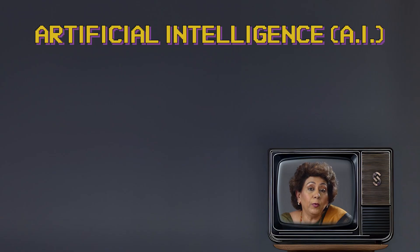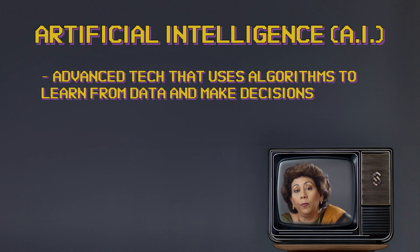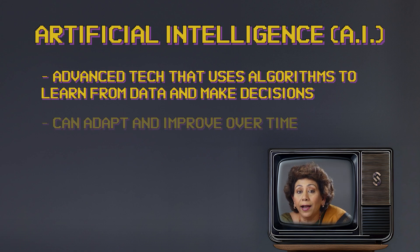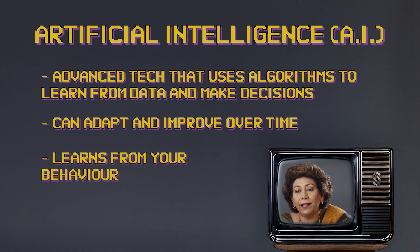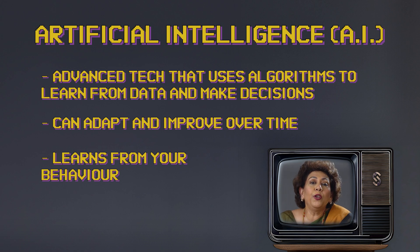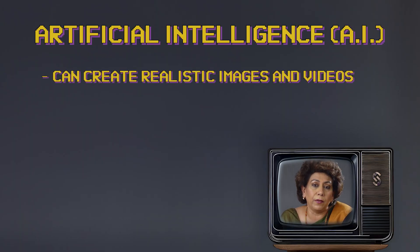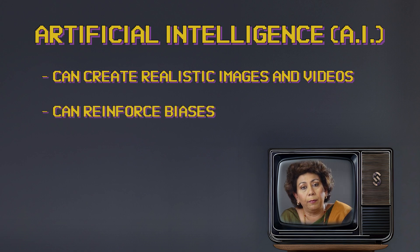Now, let's bring in AI. AI, which is short for artificial intelligence, is a more advanced form of technology that uses algorithms to learn from data and make decisions. Unlike simple algorithms, AI can adapt and improve over time. AI also learns from your behavior and predicts what you might like next. It's constantly evolving, making your online experience more personalized, sometimes eerily so. If you keep watching cooking videos, it'll serve you more, convinced that you'll starve if you don't watch one more how-to-boil-water tutorial. AI can also create realistic images and videos that people might believe are real. While AI can enhance our experiences, it can also reinforce biases by showing us more of what we already believe. Before you know it, you're convinced that the Earth is flat and your cat is secretly running the government.